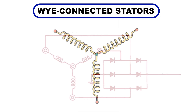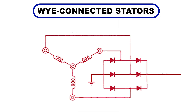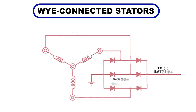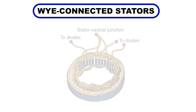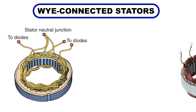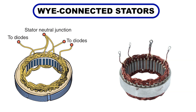Here's how it works. Current is induced in each winding by electromagnetic induction from the rotor's magnetic field. Two windings are always connected in series, so the currents from each combine before flowing to the alternator's output terminal. This design provides consistent current across a wide range of engine speeds, making it ideal for vehicles where reliable low-speed performance is critical.